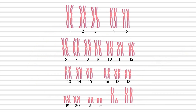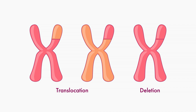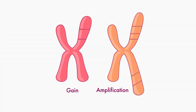Karyotyping refers to the process of looking at these markers to characterize the size, shape, and number of chromosomes to check for abnormalities. A variety of changes to chromosomes can be seen using FISH and karyotyping, including translocations, in which DNA is located in the wrong place on the chromosome; deletions, in which part of the DNA is missing; gains, in which an extra copy of the DNA is present; or amplifications, where multiple extra copies of DNA are observed.